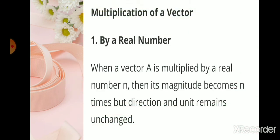Multiplication of a vector by a real number. When a vector A is multiplied by a real number n, then its magnitude becomes n times that of vector A, but direction and unit remains unchanged.